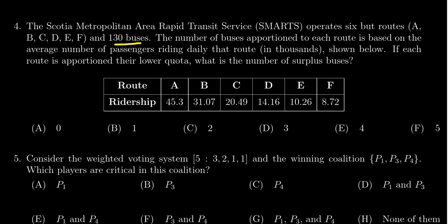And so what it asks us to do is if each route is apportioned their lower quota, what would be the surplus? Because after all, like Hamilton's method gives everyone their lower quota and then distributes the surplus by various rules. That's what we want to do right now. Alright, so we first need to figure out the total population. So you're just going to take these numbers right here and add them together.